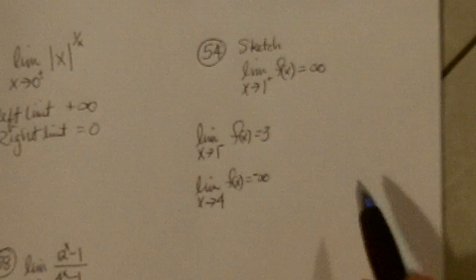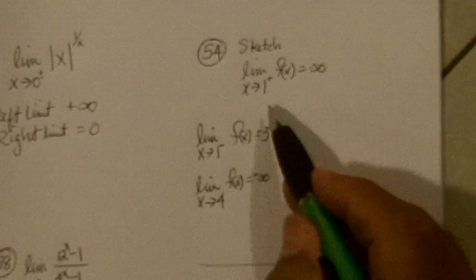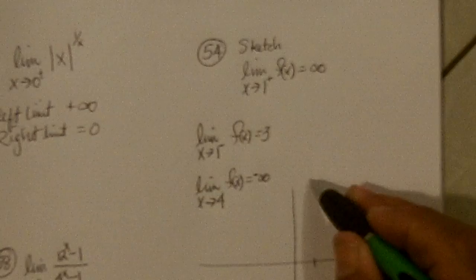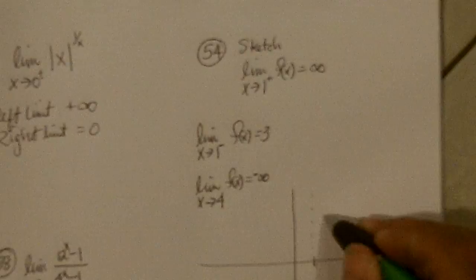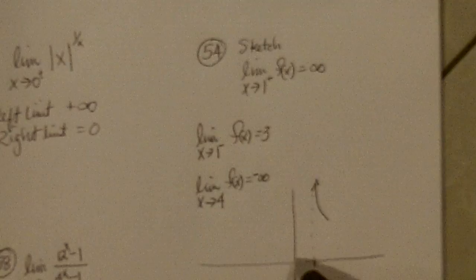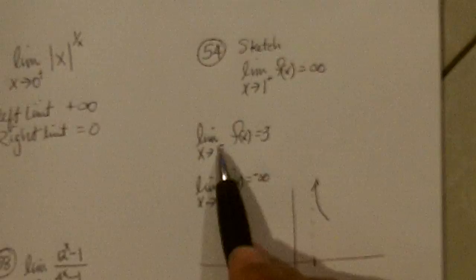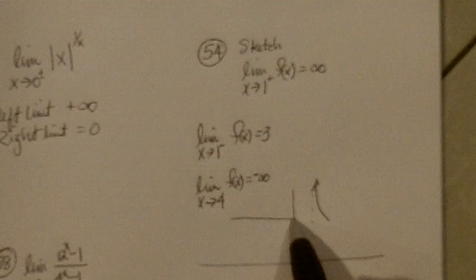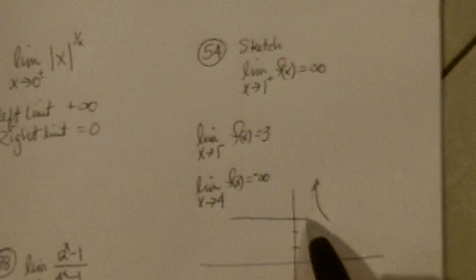Okay, now 54, we're supposed to sketch a graph that meets these criteria. So, as we approach 1 from the positive side, it's supposed to go to infinity. So, I'll just put a line here at 1 and show it going to infinity. As we approach 1 from the negative side, it's supposed to go to 3. 1, 2, 3. Approach 1.